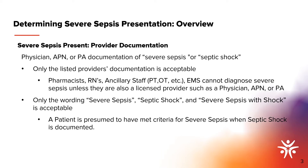Before we review the specific provider note scenarios, let's perform a quick overview of severe sepsis present. There are two ways to determine the onset of severe sepsis. The first and most direct way is provider documentation. The specifications manual is clear that it must be a physician, advanced practice nurse, or physician's assistant, and only exact wording for severe sepsis, septic shock, and severe sepsis with shock is acceptable.